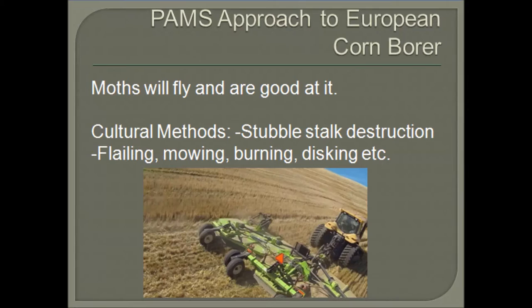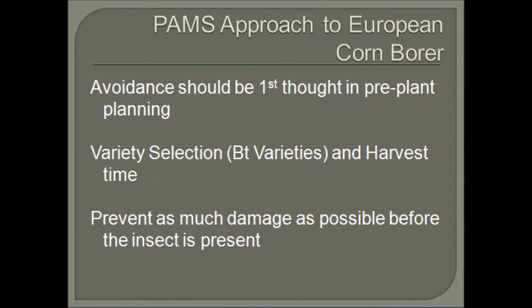To deal with the European corn borer, we're going to look at the PAMS approach. Starting with prevention, this poses some issues for us, mostly because the moths themselves are very strong flyers and are able to fly many miles on wind gusts and the jet stream. Cultural methods such as stalk destruction offer the most control of generations. Avoidance is the best bet to avoid the losses that can be brought on by the European corn borer, and it should be the first thought in a pre-planting plan for a grower. Selecting varieties, preferably BT lines that have the Cry1AB or Cry1F genes, are recommended, as well as getting the crop out in time to prevent lodging damage.